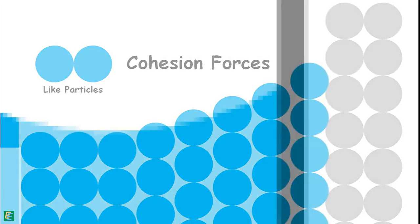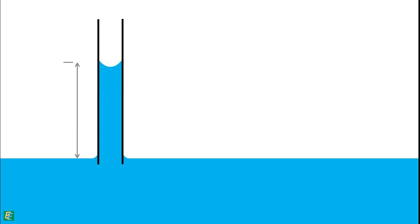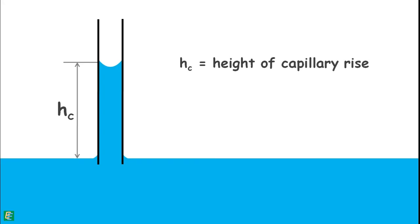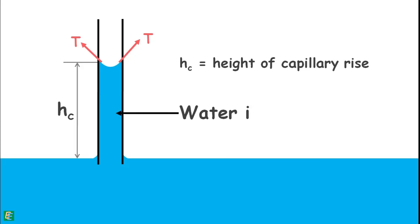Because of adhesion and cohesion forces, water is pulled up into the glass tube to a height hc, which denotes the height of capillary rise. At equilibrium, the surface tension is trying to pull the water column up into the tube while the water's own weight is trying to pull it down. So the water column inside the tube is in tension.